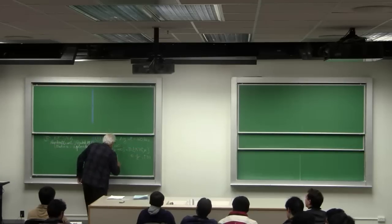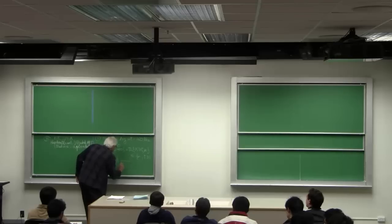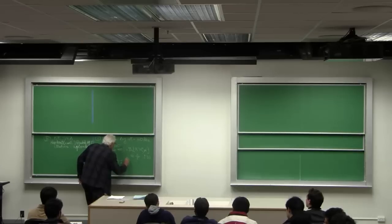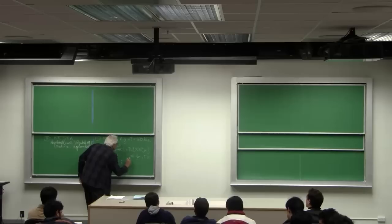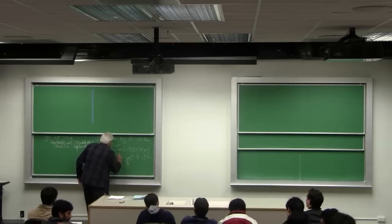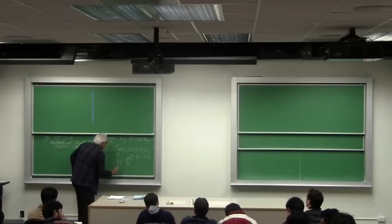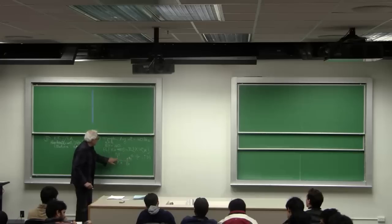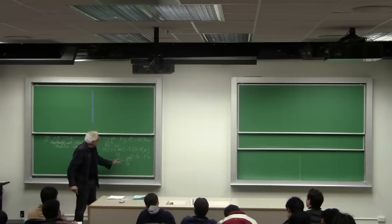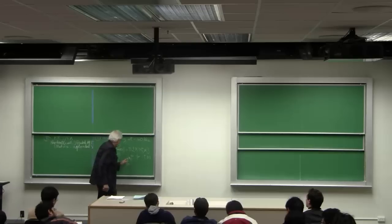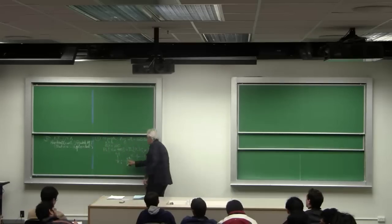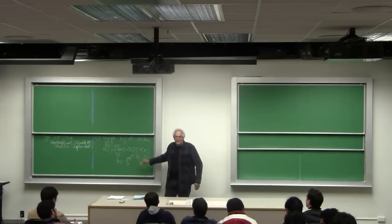There's the distribution that achieves this. Here's mu, and here's t mu. And you have mass 1 over t here, and you have mass 1 minus 1 over t here at 0. And you'll see that that average is mu. So when you're greater than t mu, you're just right on it. And otherwise you're not.